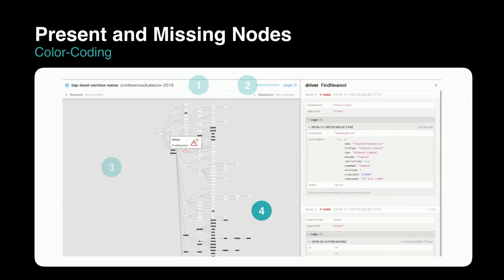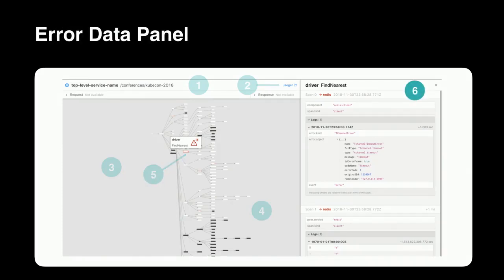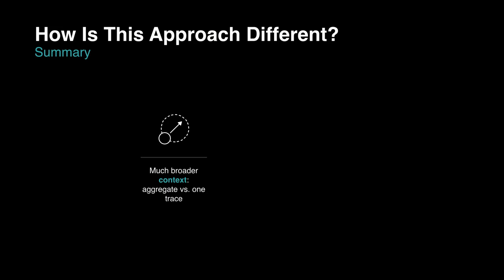Section four clearly draws your attention, saying this whole thing went wrong somewhere at the bottom of this section. Red nodes indicate errors that happened, with a threshold because some errors are retried and don't break the transaction. You can mouse over to get more details or click to get a detailed panel on the right with tags and logs from the span explaining what actually happened, with concrete error messages. The two main differences from a regular trace diff: it gives much broader context of comparison and confidence that you're comparing against representative behavior, not a complete outlier.